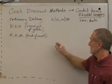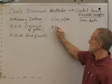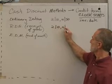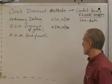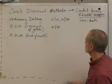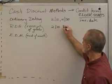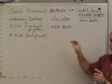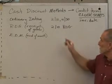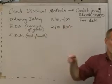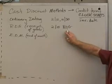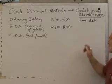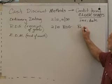Receipt of goods. This would say 2/10 net 30. Let's do it this way: 2/10 ROG. It may or may not say net 30. We always assume net 30 unless it says something different. It could say 2/10 net 60 ROG. But ROG means the clock doesn't start until the receipt date.